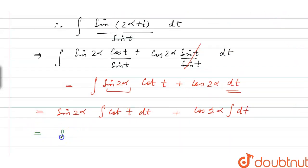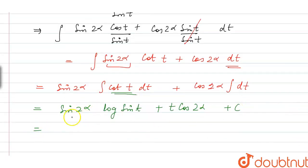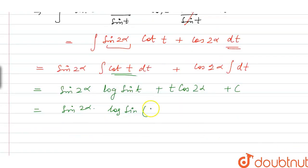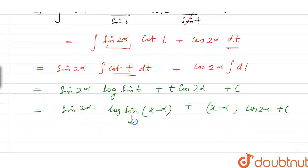We know that the integral of cot(θ) dθ equals log|sin(θ)|. So the result is sin(2α)·log|sin(t)| plus cos(2α)·t plus constant c. Substituting back t = x − α, this becomes sin(2α)·log|sin(x − α)| plus cos(2α)·(x − α) plus c. Comparing with the given form a(x)·cos(2α) plus b(x)·sin(2α) plus c, we identify a(x) = x − α and b(x) = log|sin(x − α)|.